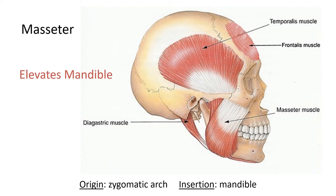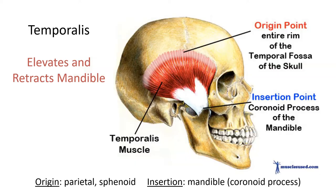Next, we have the masseter, which attaches to the zygomatic bone and zygomatic arch and comes down onto the mandible. Behind it is the temporalis muscle. The masseter is one you can feel if you clench your jaw. They've removed the masseter and cut away the zygomatic arch here, and you can see the temporalis is a broad, rather powerful muscle. It connects to the parietal and sphenoid bones as its origin, then inserts onto the coronoid process of the mandible, pulls on it, and closes the jaw — it elevates the jaw.